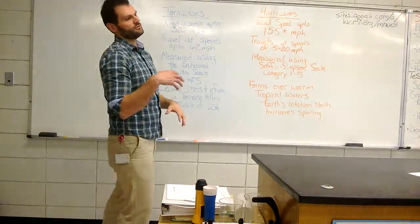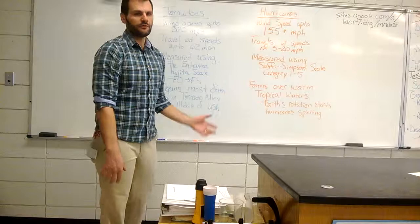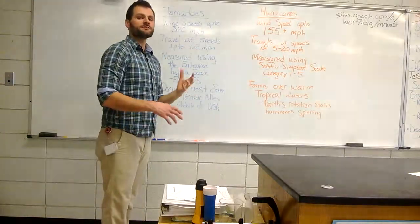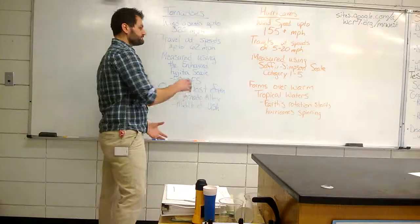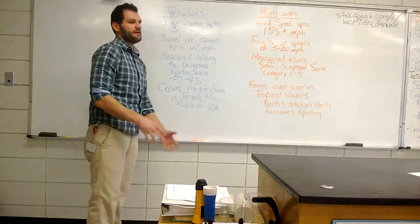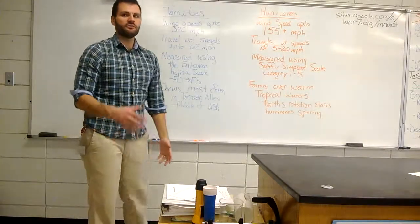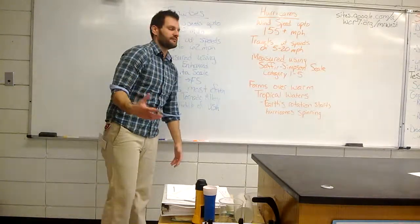So they can be moved very fast across the land. Some of them, however, move very slow. Not all of them move that fast. Which is what the Joplin tornado did—it moved fairly slow and caused a lot of damage.